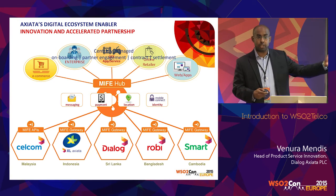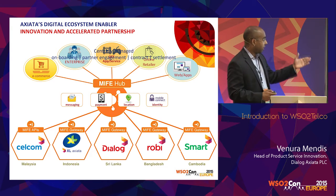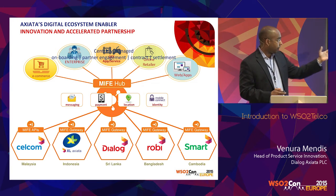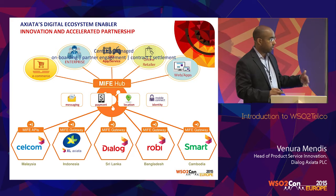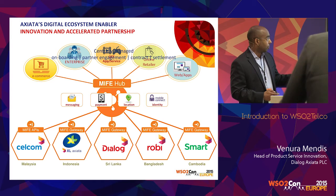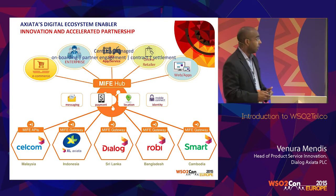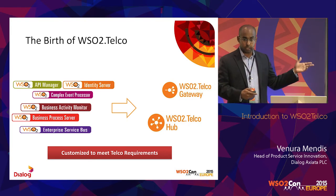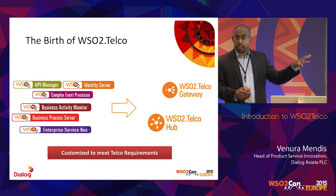This is what we refer to as MIFF in Axiata. We've defined a standard API exposure for each operator — payment, SMS, location, and of course Mobile Connect for identity. What we've done is aggregate those APIs into a single hub, a single integration point managed by the Axiata group — a single central onboarding point for service providers, a central point for the legal and contractual piece, and for settlement.